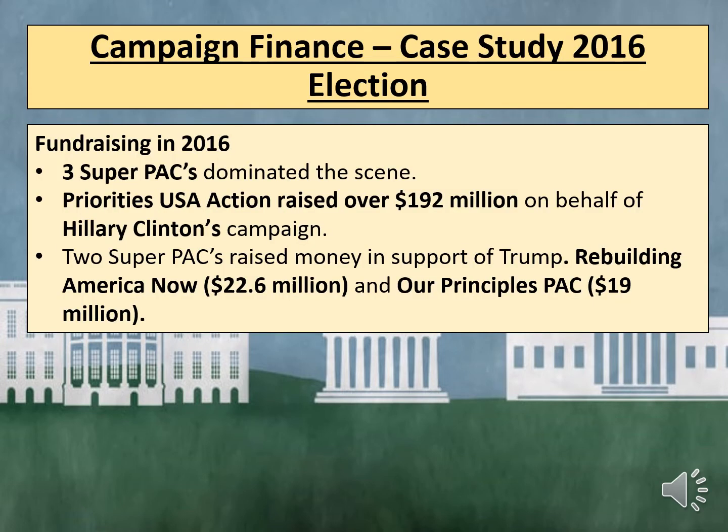Let's take a look at the 2016 election as a case study for how campaign finance worked in that election year. Three super PACs dominated the scene. Priorities USA Action raised over $192 million on behalf of Hillary Clinton's campaign, representing over 90% of all outside group money raised on her behalf. Two super PACs raised money in support of Trump: Rebuilding America Now raised $22.6 million and Our Principles PAC raised $19 million.